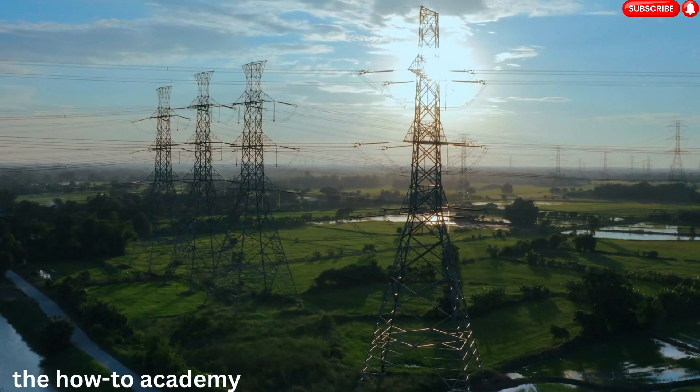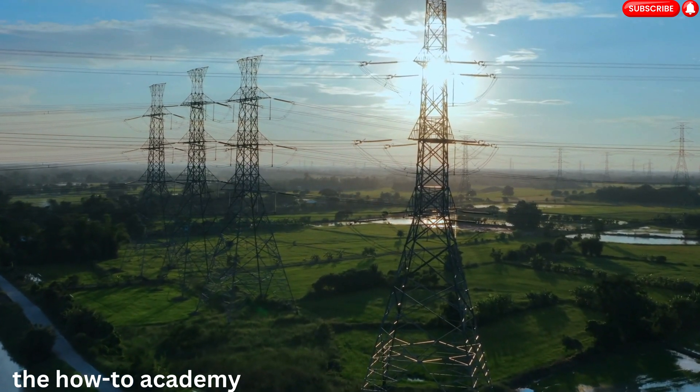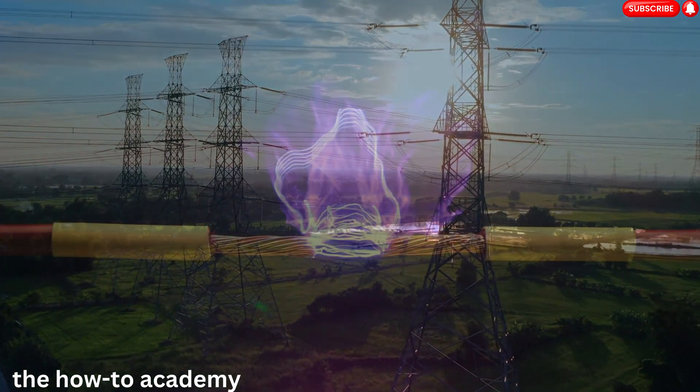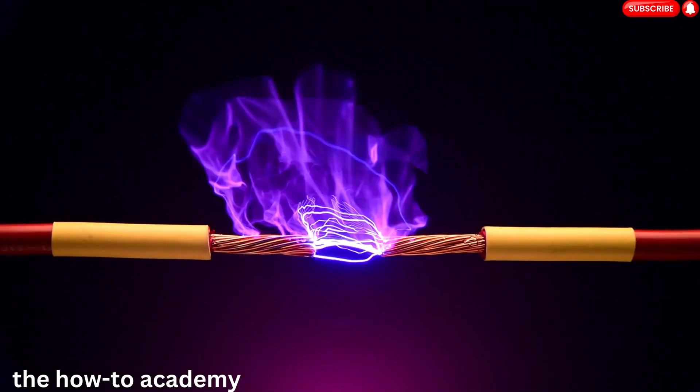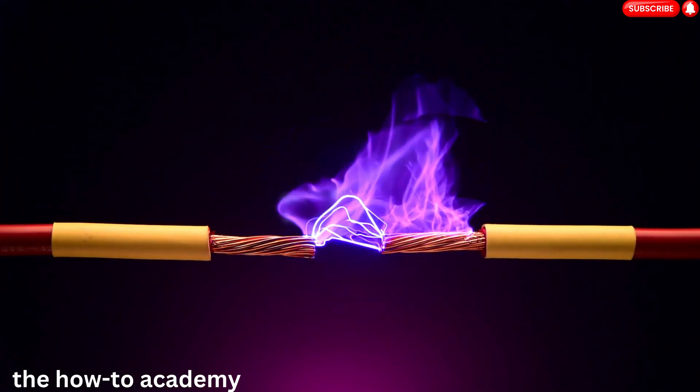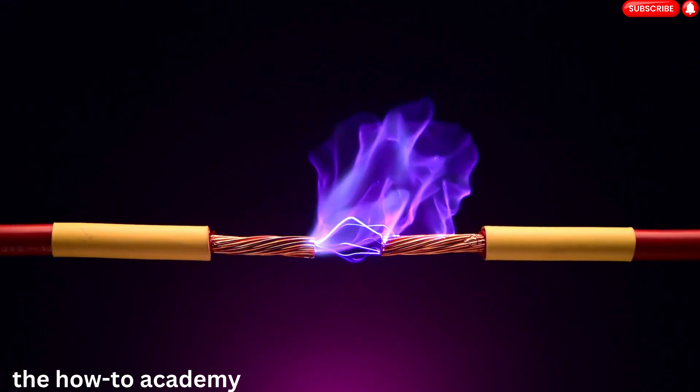Electrons also play a key role in electricity. When a force, like a battery or a generator, is applied, electrons start moving. This movement of electrons constitutes an electric current, powering everything from the device you're watching this video on to the lights in your home.